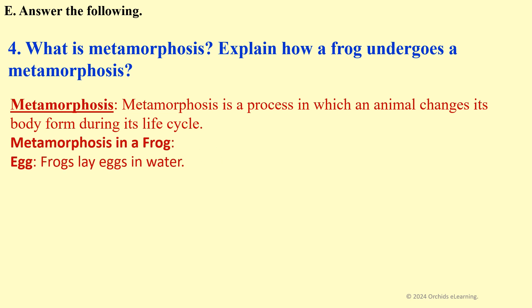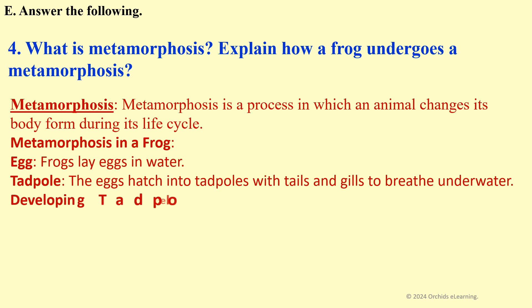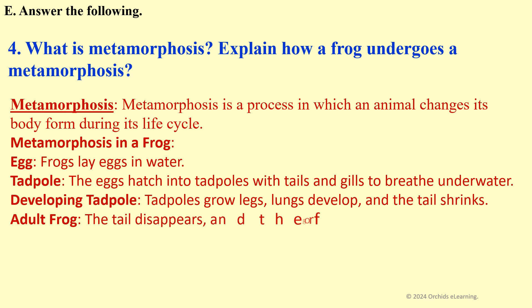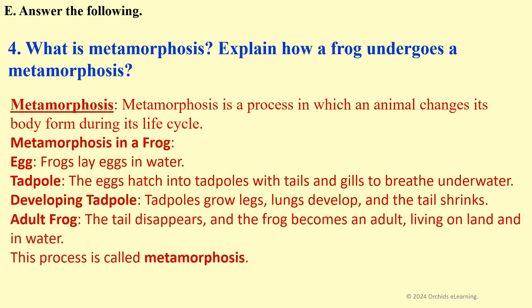Frogs lay eggs in water. The eggs hatch into tadpoles with tails and gills to breathe underwater. Tadpoles grow legs, lungs develop, and the tail shrinks. The tail disappears, and the frog becomes an adult, living on land and in water. This process is called metamorphosis.